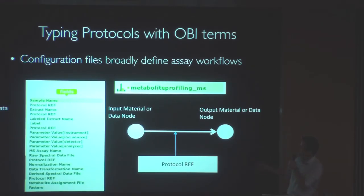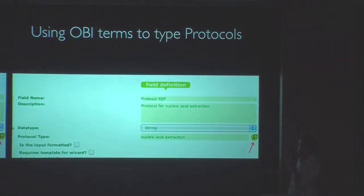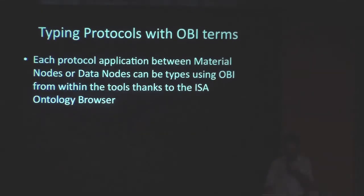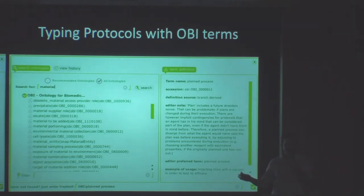We can tag every field — this is an example from the configuration component — where we declare for each field how it should be mapped to a specific protocol. For instance, the protocol ref can be tagged with a nucleic acid extraction protocol. By hitting this button we can display, from within the tool, the hierarchy from OBI with all the list of classes, and we can start validating the workflow and detecting errors if people have poorly annotated their protocol between two nodes.